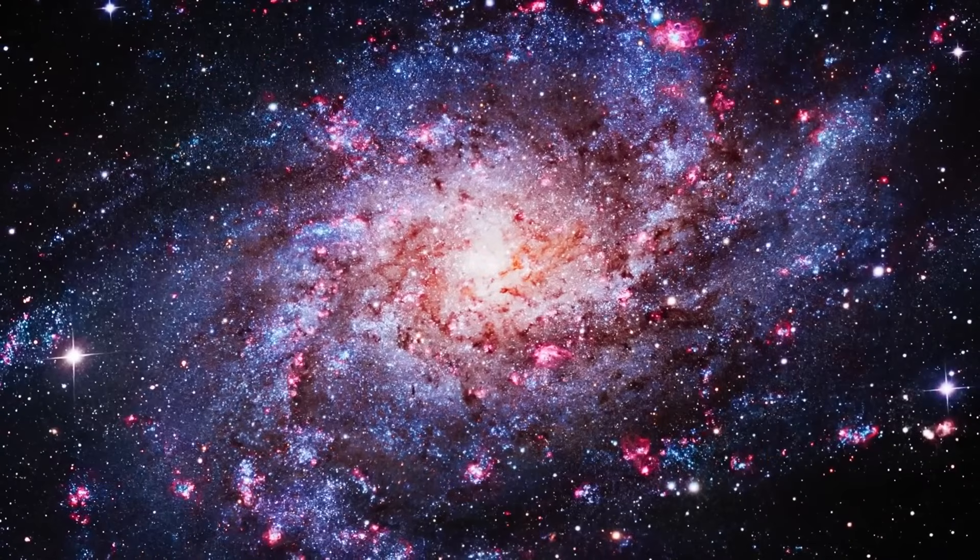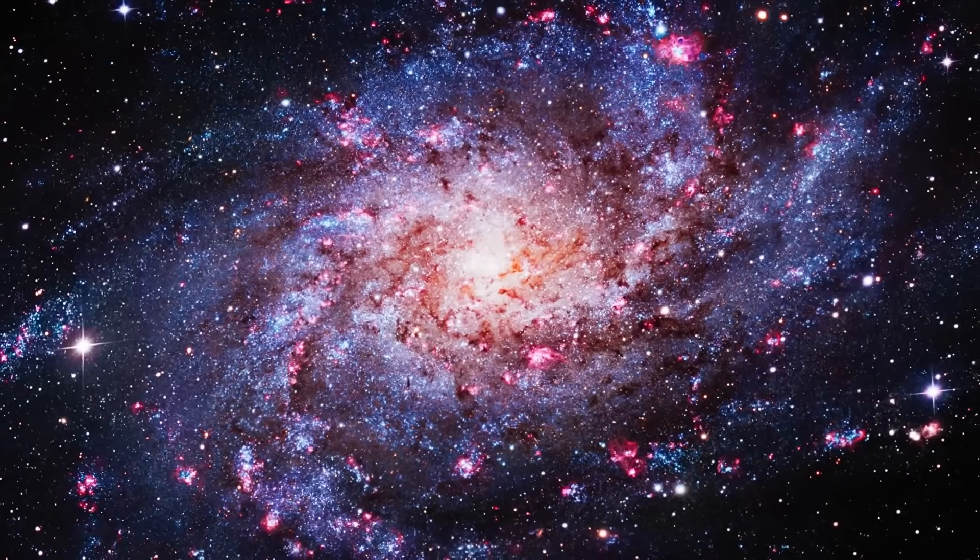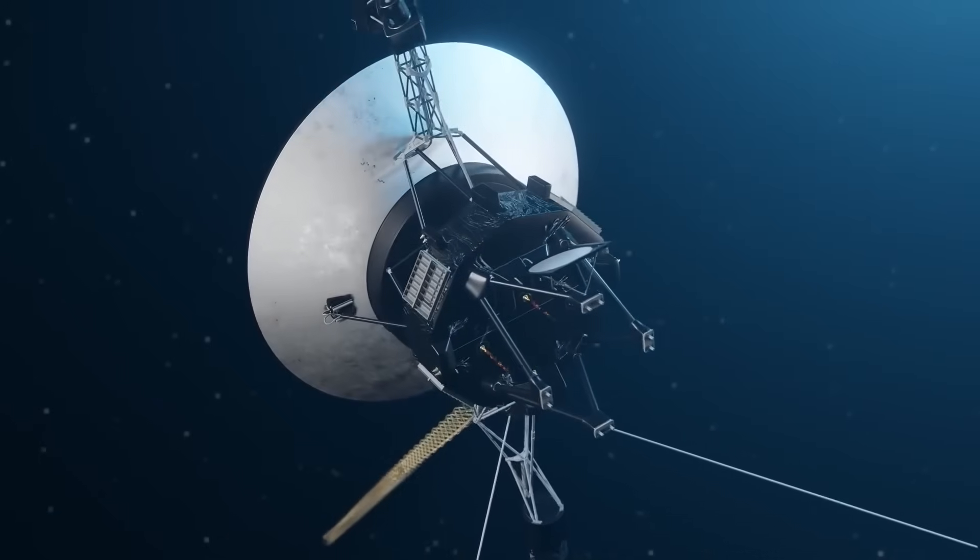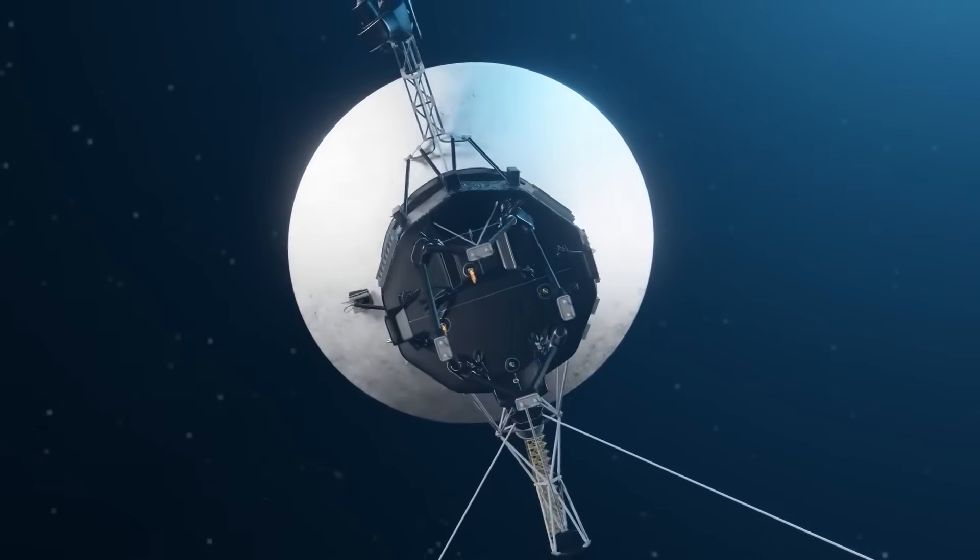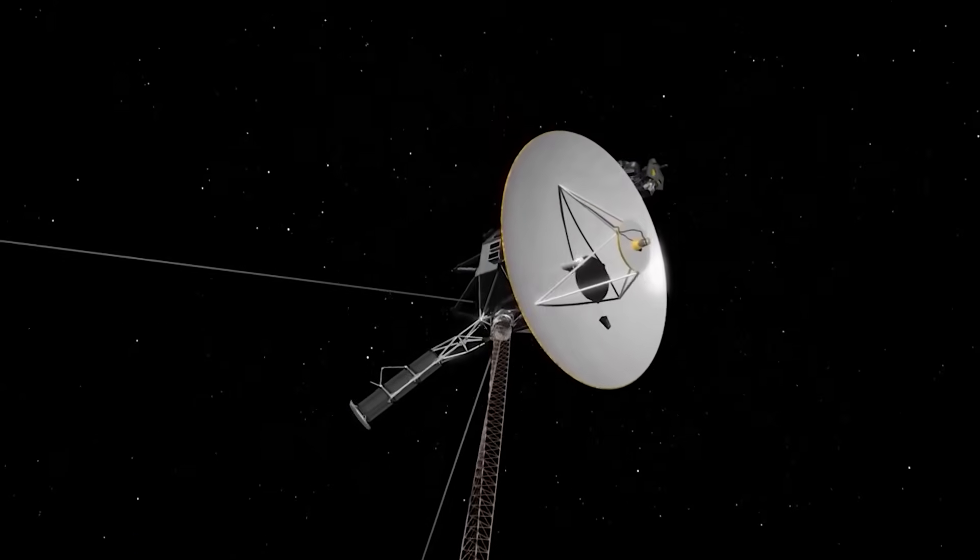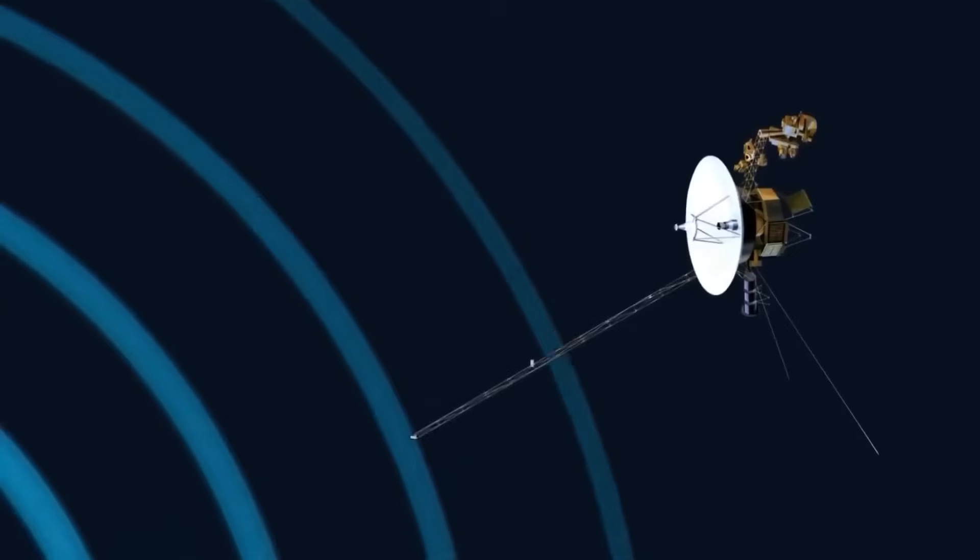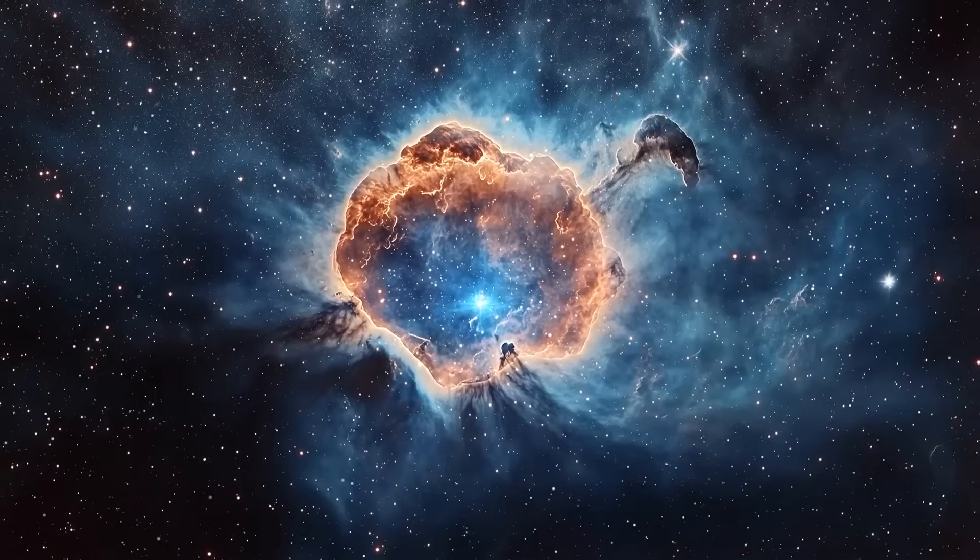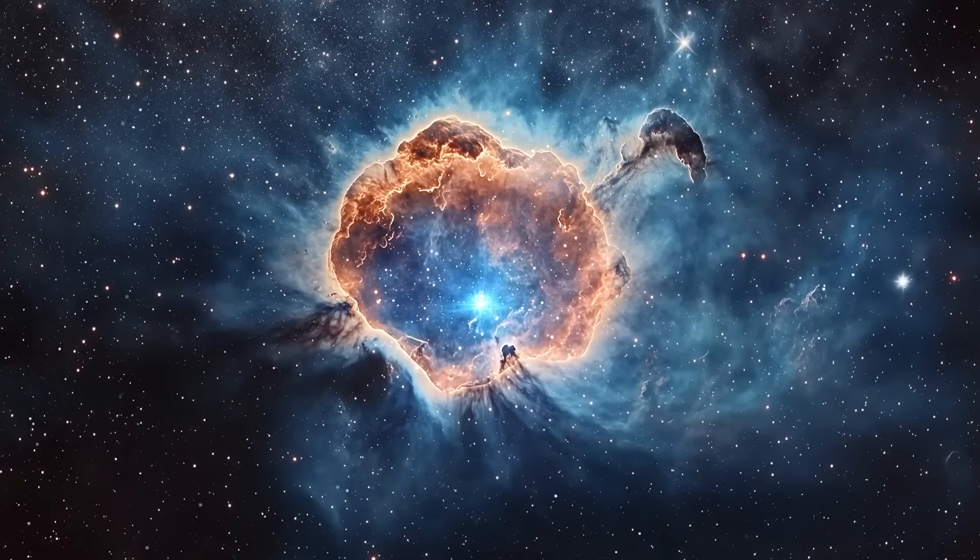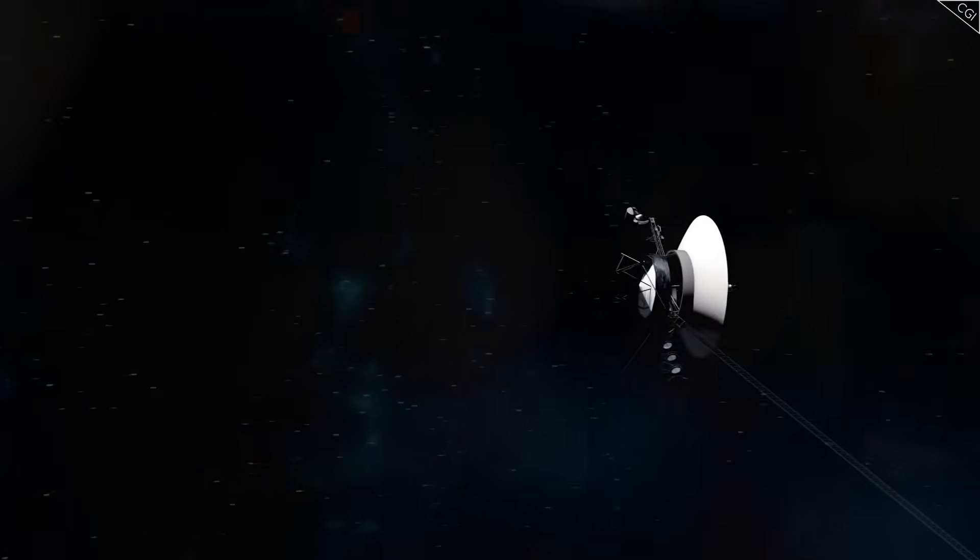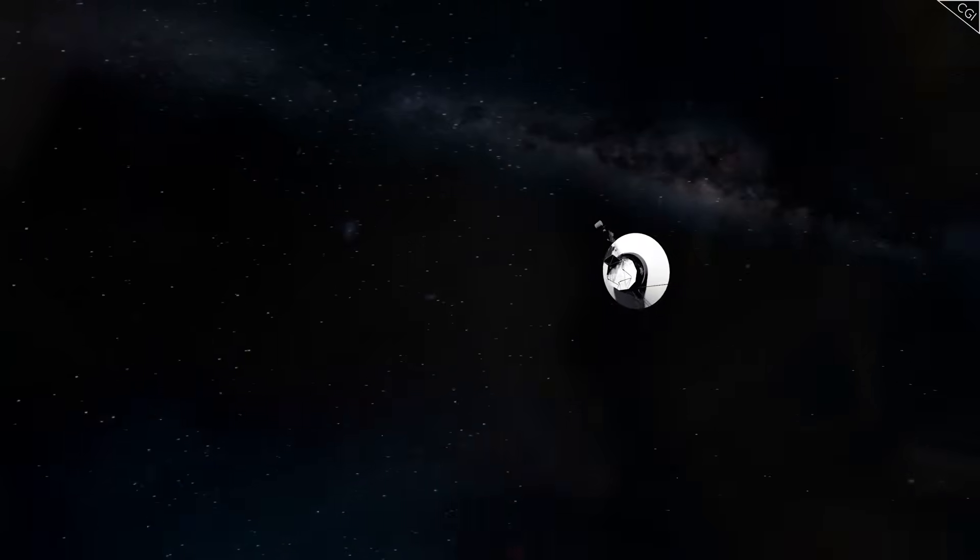While NASA's deep space analysts worked to decipher the swarm's behavior, something curious began to unfold back on Earth. Amateur radio operators, hobbyists scattered across different continents, started reporting faint rhythmic static patterns unlike any common source of interference. These weren't random bursts or background cosmic noise. The pulses had a structure, a subtle regularity, and they seemed to align almost perfectly with the hours when the Voyagers were registering their most intense anomalies.